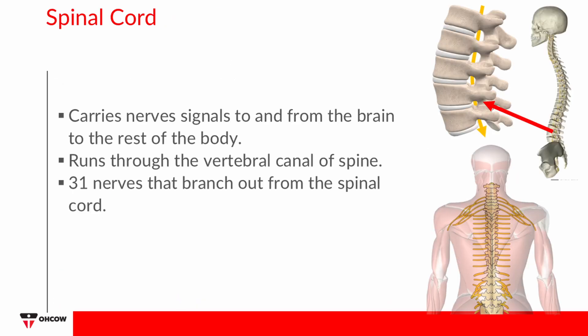The spinal cord is a long, tube-like band of tissue which connects your brain to your lower back. It carries nerve signals from your brain to your body and vice versa, allowing you to feel sensations and move your body. Any damage to your spinal cord can affect your movement or function. The spinal cord runs through the vertebral canal, and there are 31 nerves that branch out from the spinal cord and travel throughout the body.